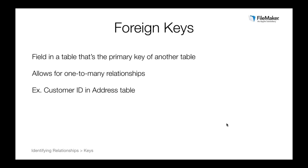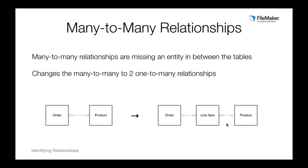The second type of key you'll need is foreign keys. A foreign key is a field in a table that holds the primary key of another table. A foreign key plus a primary key allows for one-to-many relationships. An example of a foreign key is a customer ID in an address table. If your application — in this case ABC Automotive — needs to track multiple addresses for a customer, you need to have a customer ID foreign key in the address table.